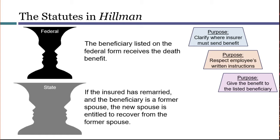So let's consider whether the Virginia law poses a significant obstacle to any of these purposes. The state law doesn't really pose an obstacle to the first purpose — the insurer can follow federal law, send the benefits to the listed person, and we've got our clarity. There is an obstacle to the second purpose, because the money is not ultimately being distributed according to the written instructions. And there is absolutely a conflict with the third purpose, because the listed beneficiary is deprived of money that Congress wanted them to have. So this is a crystal clear example of obstacle preemption.